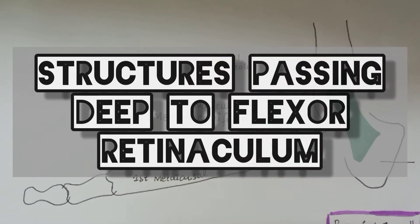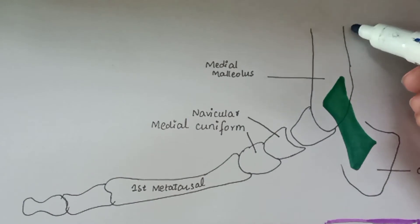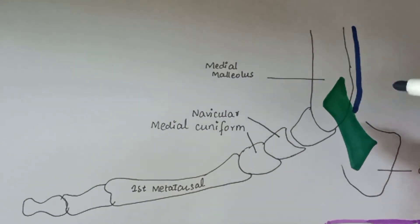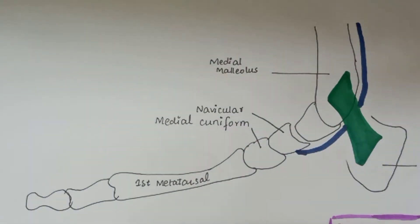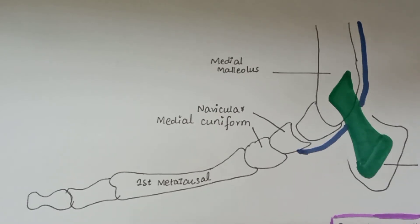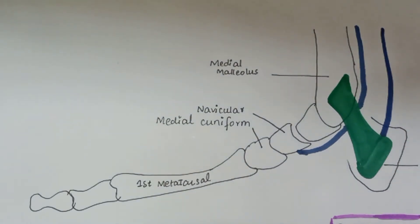Now we will see the structures that pass deep to the flexor retinaculum. There are three tendons, one nerve, and one artery. The first tendon is the tendon of tibialis posterior, which gets inserted into the navicular. Next is the tendon of flexor hallucis longus, which gets inserted at the base of the distal phalanx. This is the flexor hallucis longus tendon.